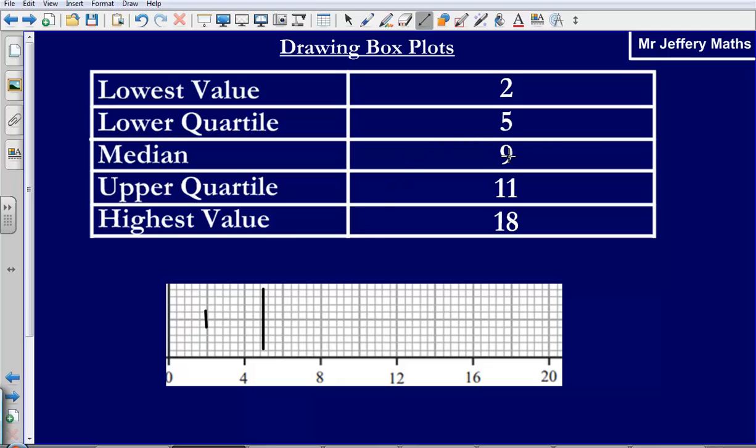Now the median is a line that goes through the middle of the box, and that is at 9 this time. So I'm marking 9 on here.